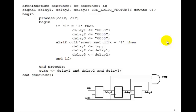So let's write the architecture for this. We'll write these signals for delay1, delay2, and delay3. There's delay1, delay2, and delay3, the outputs of the three flip-flops.